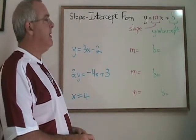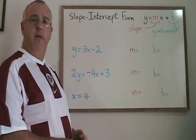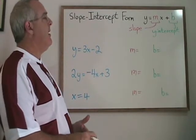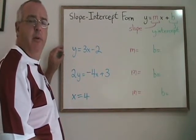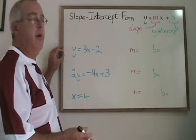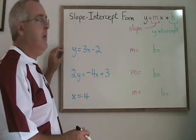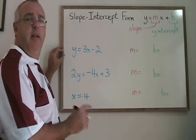But again, in some locations, different variables are used. Refer to your text or teacher. This form of the equation can always be used to find the slope and the y-intercept, but this will only work if the y is isolated to the left of the equal sign.